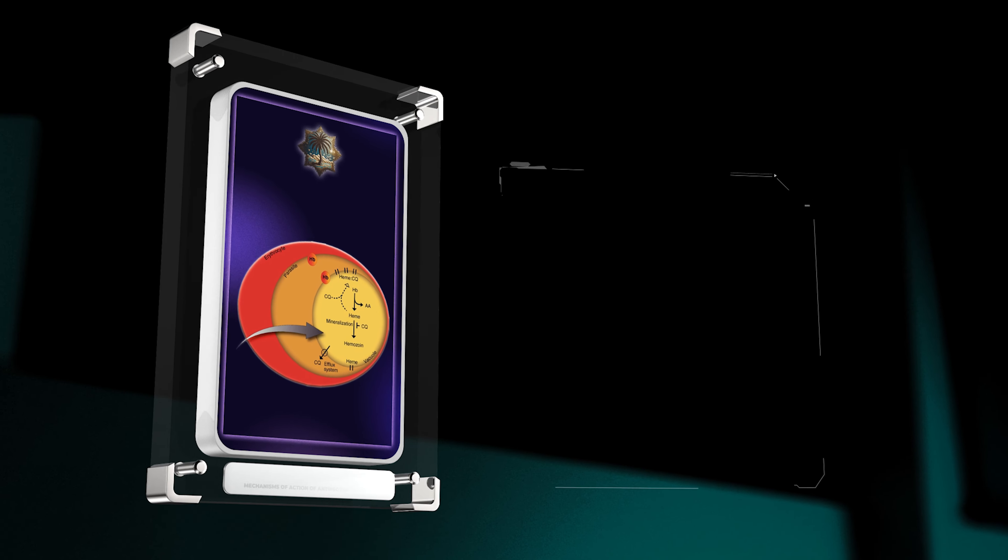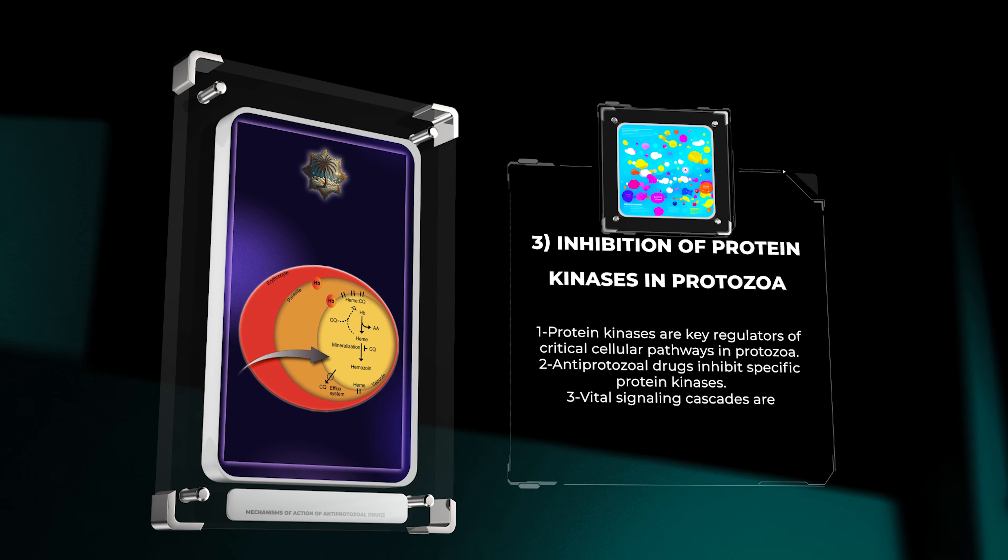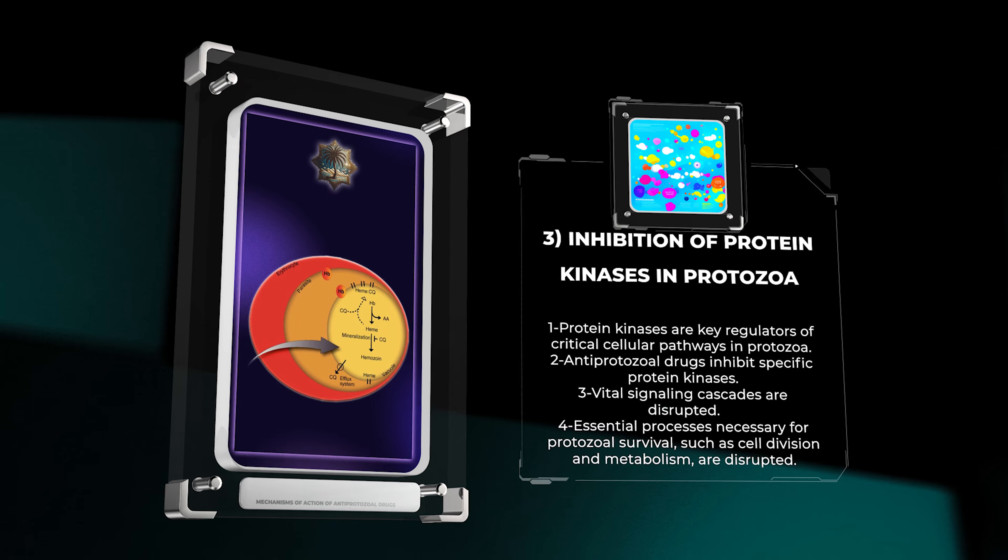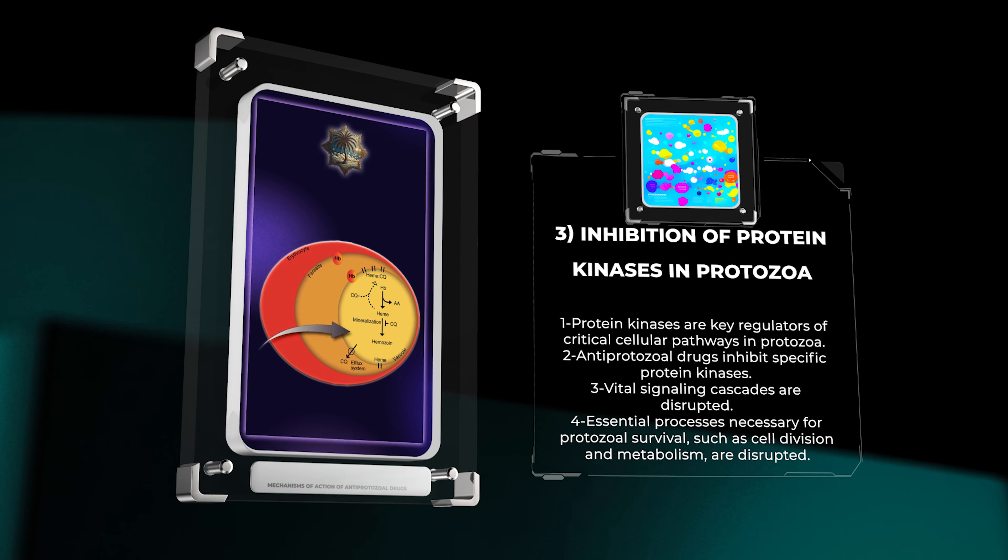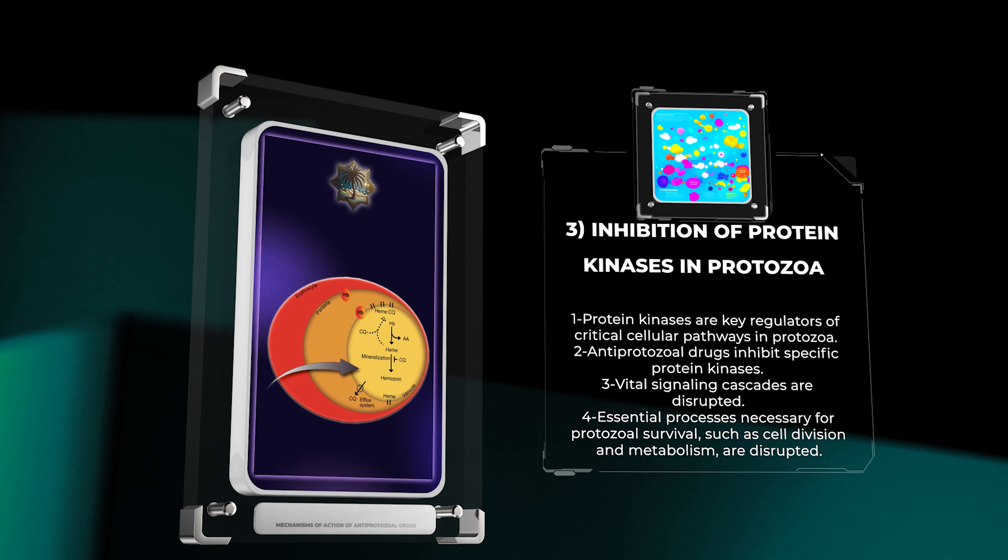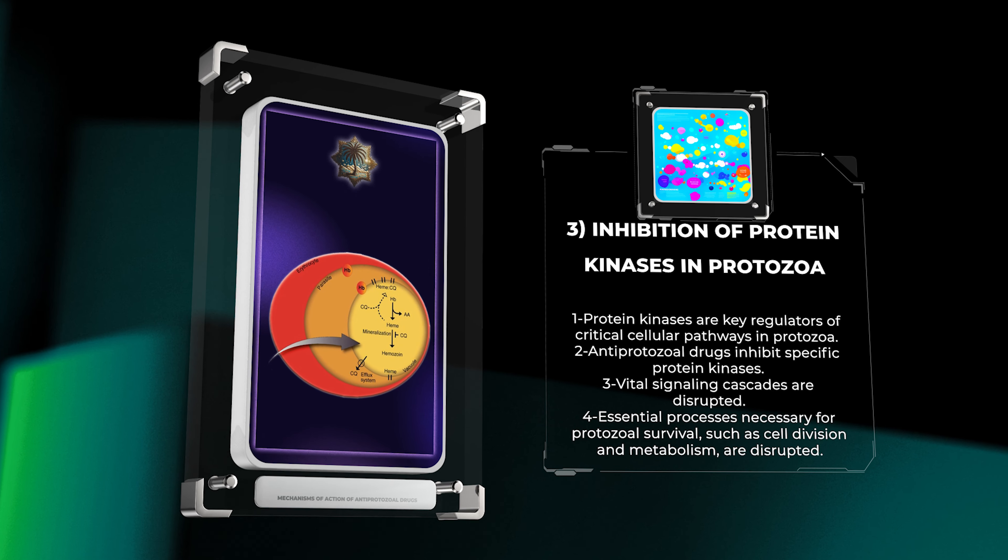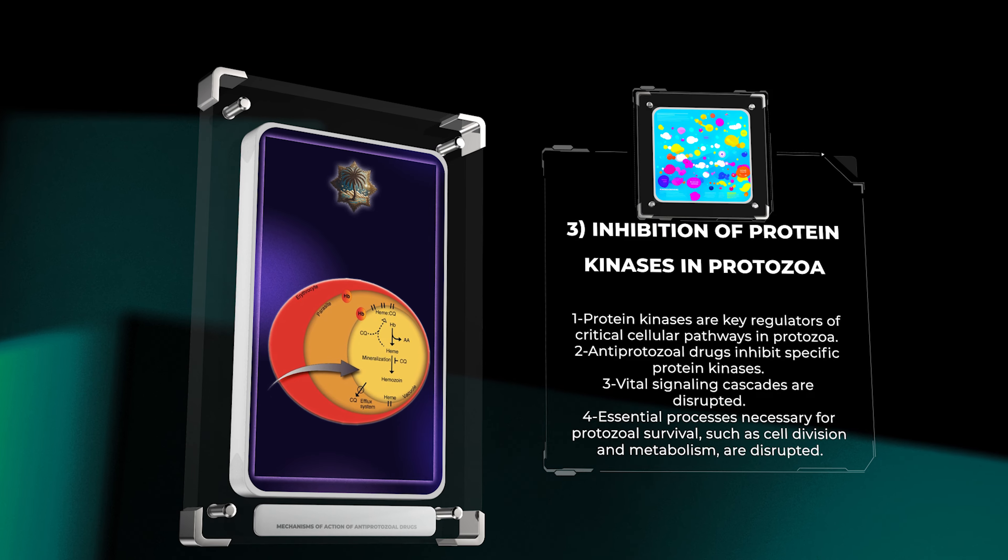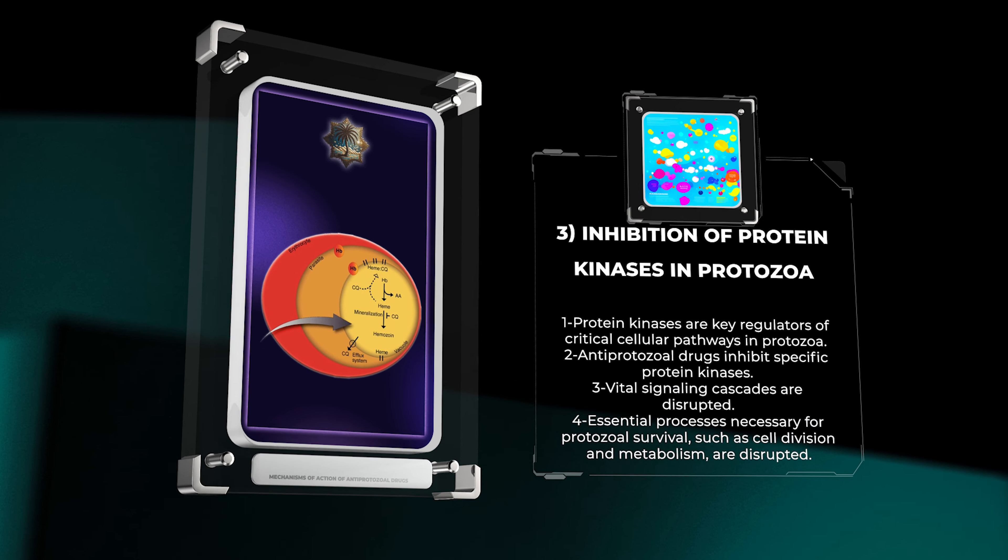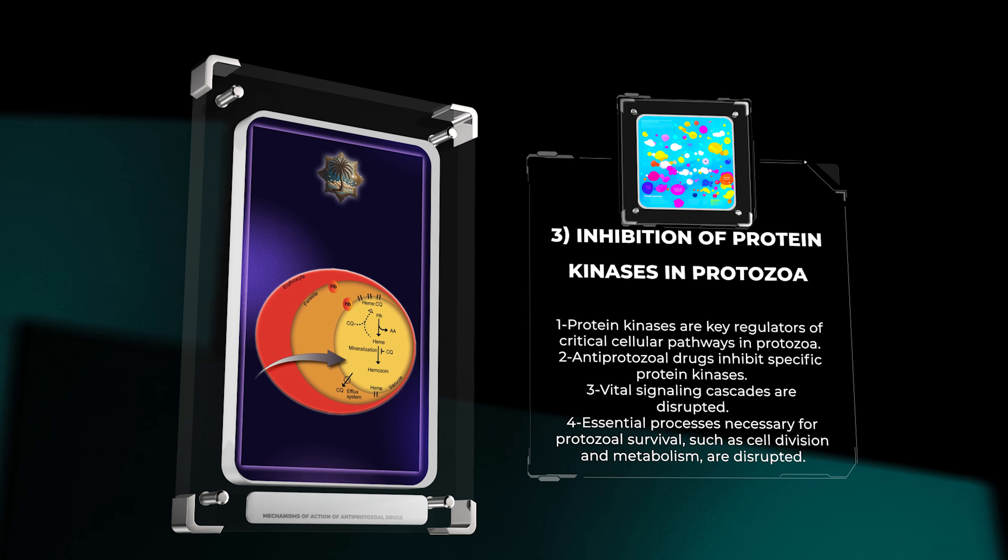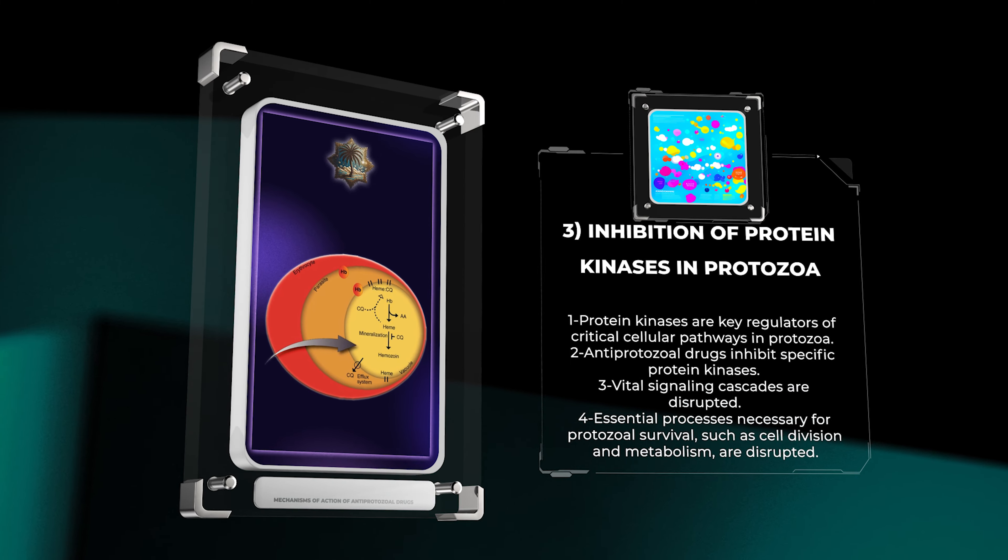Protein kinases are key regulators of critical cellular pathways in protozoa. This makes them attractive targets for antiprotozoal drugs. By inhibiting specific protein kinases, these drugs interfere with vital signaling cascades, disrupting essential processes necessary for protozoal survival, such as cell division and metabolism. This multi-pronged approach effectively cripples the parasites and halts their pathogenicity.